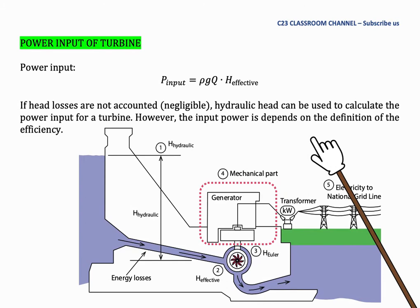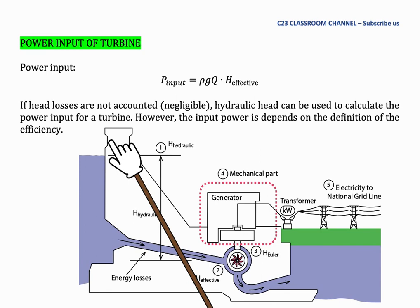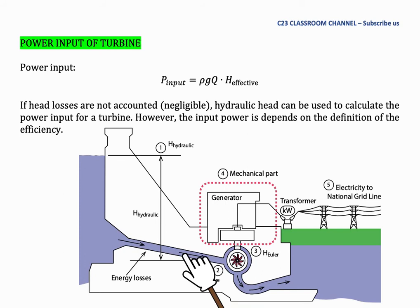The net head that occurs in front of the Francis turbine inlet is called the effective head, which becomes the input for the Francis turbine. Power input of the turbine can be written as P_input = ρgq × H_effective. If head losses are not accounted for, hydraulic head can be used to calculate the power input. Normally, engineers will design the Francis turbine near to the dam to neglect the energy losses in the pipe system.